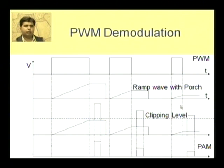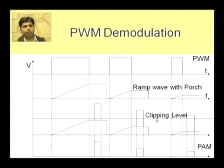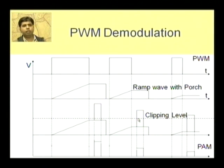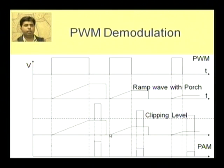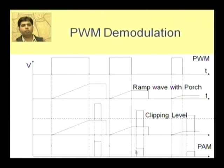After that, the next step is a clipper, and this is the clipping level. Above this particular level, whatever the pulse carries will pass through; the rest will be clipped out. So the portion of the signal lying below this clipping level will be clipped out and only the upper portion will remain.